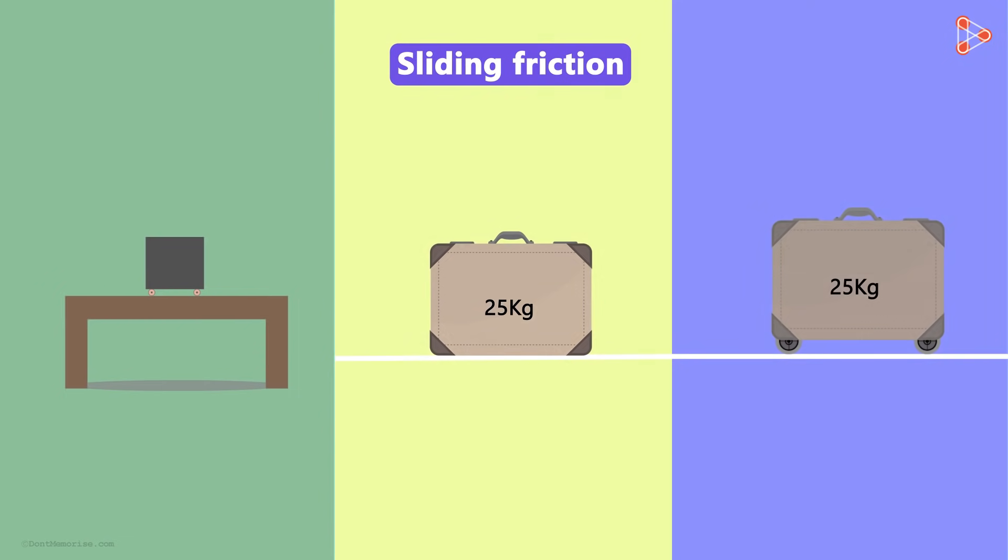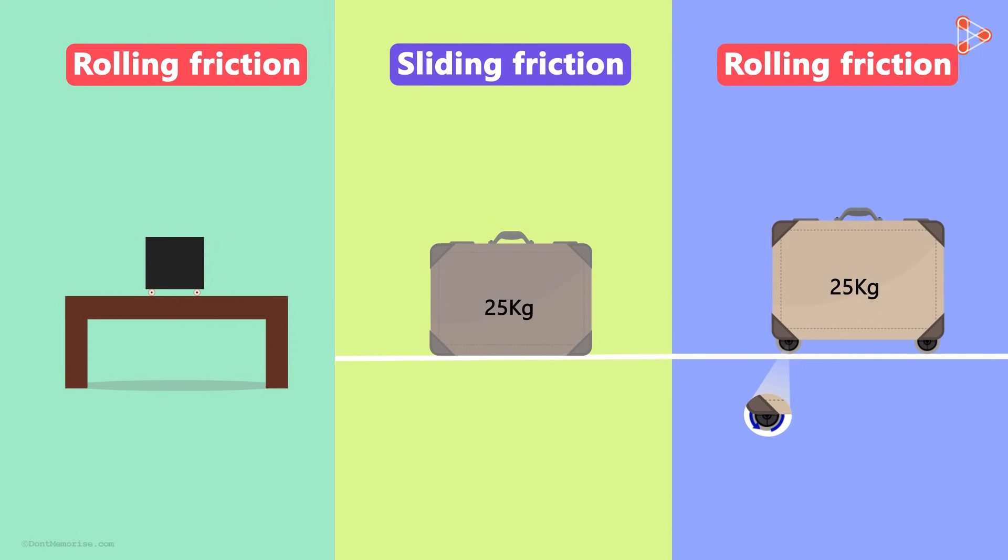But what happens when we attach circular wheels at the bottom of the luggage? Yes, the friction gets reduced to a great extent. This type of friction which arises when an object is rolled on a surface is called rolling friction. It is a force associated with rotational movement.